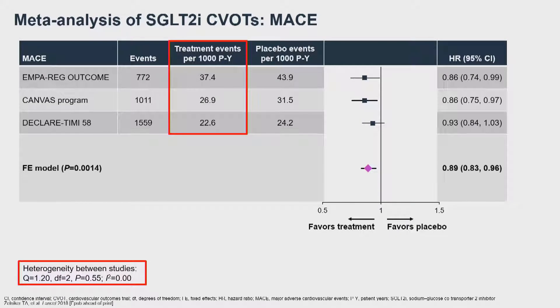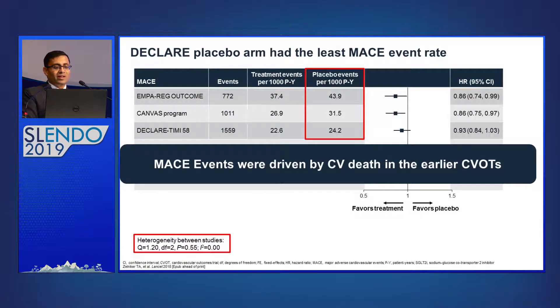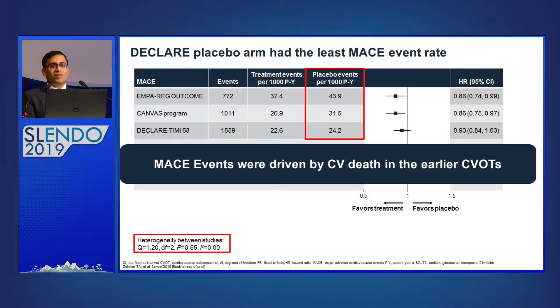It is important to understand why DECLARE didn't show superiority compared to placebo for cardiovascular outcomes. You just have to look at how many events occurred in the placebo arm — that tells you what kind of patients were chosen. There were only 24 events per thousand patient-years in the DECLARE placebo group, compared to almost double in EMPA-REG. The patients in DECLARE had a lower cardiovascular risk — the more the risk, the greater the reduction; the less the risk, the less the reduction.